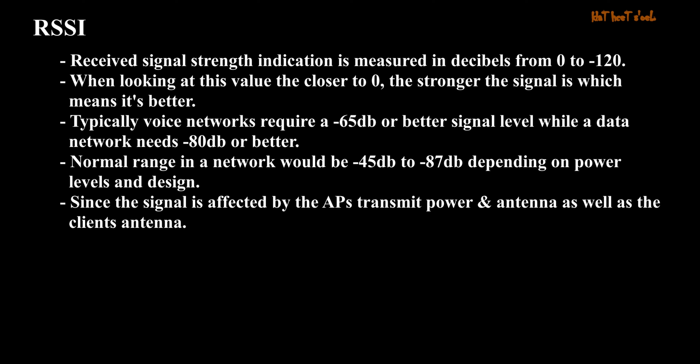RSSI — Received Signal Strength Indication — is measured in decibels from 0 to minus 120. The closer to 0, the stronger the signal, which means it's better. Typically, voice networks require a minus 65 dB or better signal level, while a data network needs minus 80 dB or better. Normal range in a network would be minus 45 dB to minus 87 dB, depending on power levels and design, since the signal is affected by the access point's transmit power and antenna as well as the client's antenna.